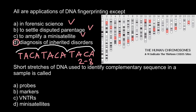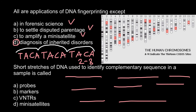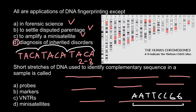The next question: short stretches of DNA used to identify a complementary sequence in a sample are called — and here are four answers to choose from. Basically, we use this technique when we have a mixture of DNA fragments and we want to find one particular fragment. So we make a DNA construct of the complementary sequence — for example, if we are looking for the sequence A, A, T, T, T, C, C, G, G, we have to make a primer that would be complementary to this sequence.